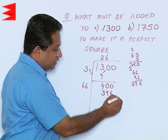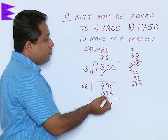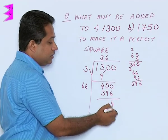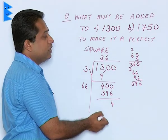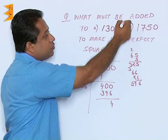Now if the question was what should be subtracted from 1300 to make it a perfect square, this would have been an answer. We should subtract 4 from this to make it a perfect square. However, this question is different. What is the least number that must be added to this to make it a perfect square?